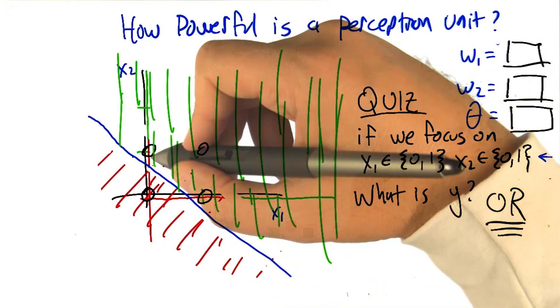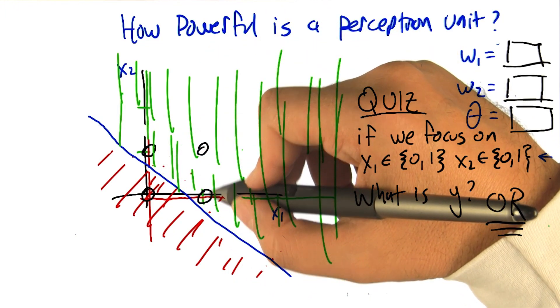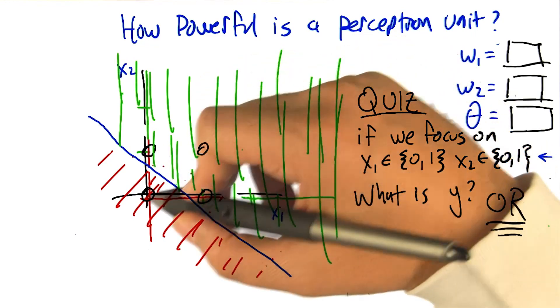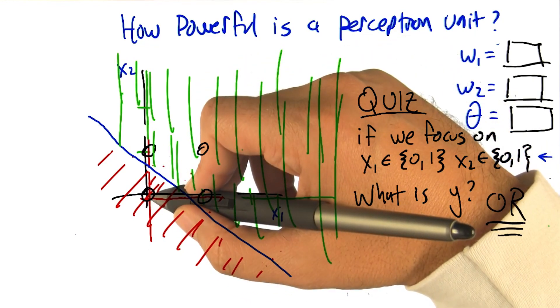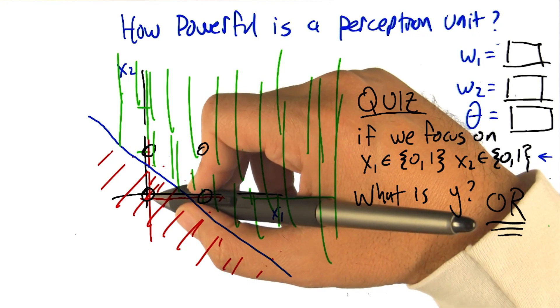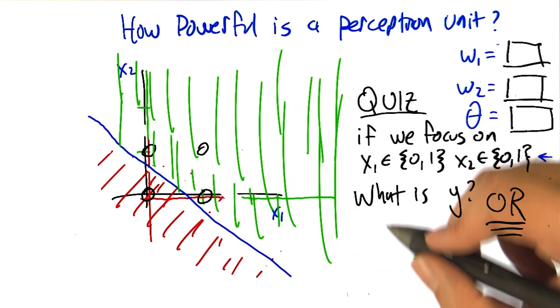So that now, these three points are in the green zone. They're going to output one, because of the OR. And the only one that's left in the zero zone, in the red zone, is the zero, zero case. So how are we going to be able to do that?